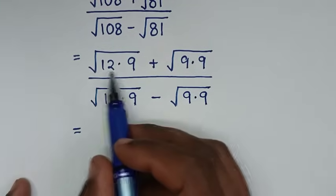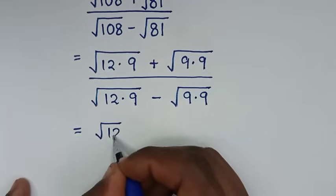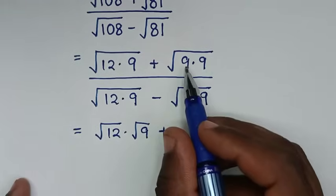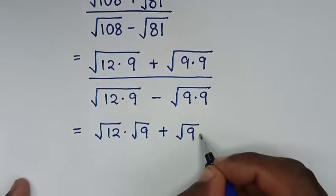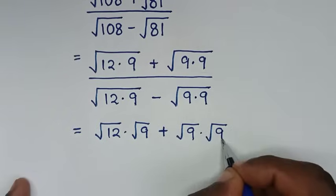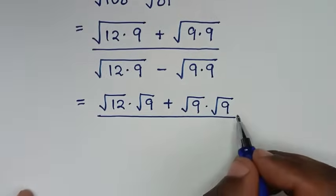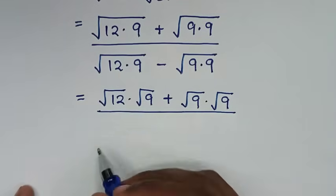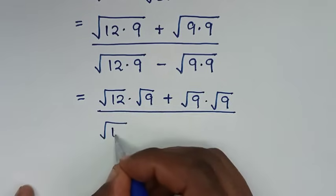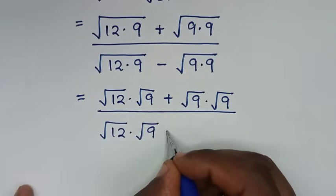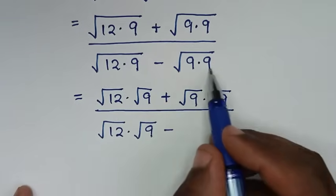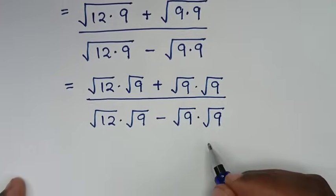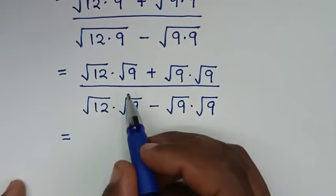We will separate these square roots. In the numerator it will be square root of 12 times square root of 9, plus square root of 9 times square root of 9. In the denominator it will be square root of 12 times square root of 9, minus square root of 9 times square root of 9.